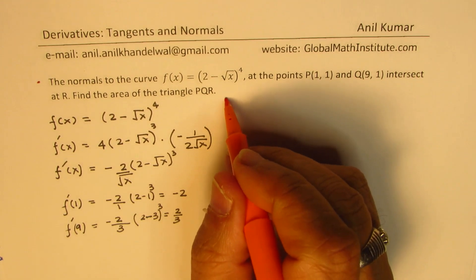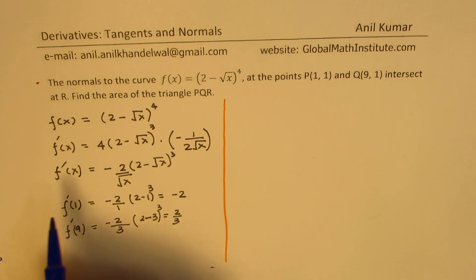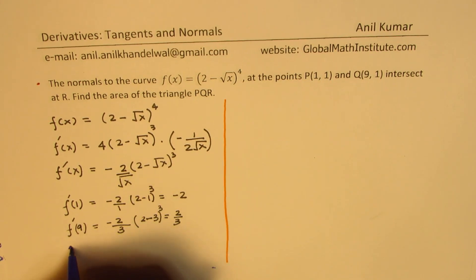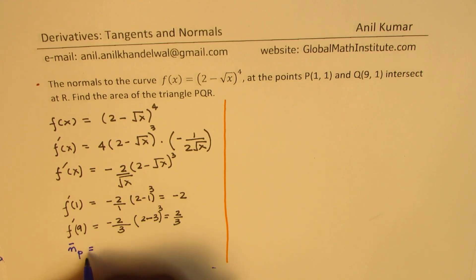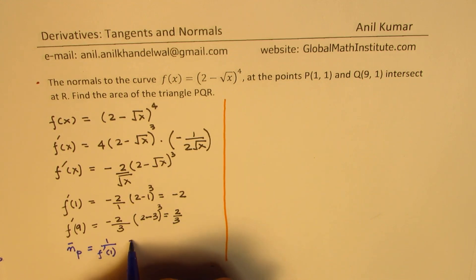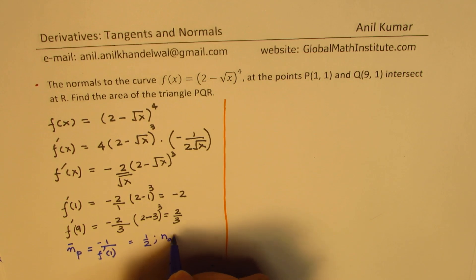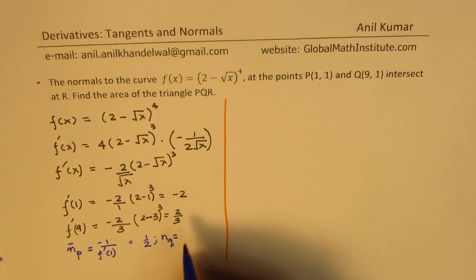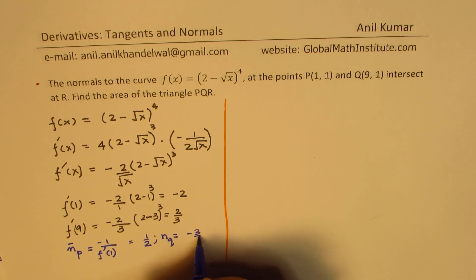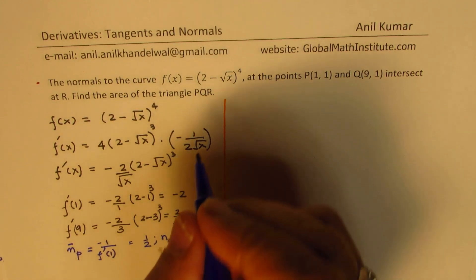These are the slopes of the tangent lines. From here we can find the slopes of the normals. The slope of the normal at P is the negative reciprocal of −2, which is 1/2. The slope of the normal at Q is the negative reciprocal of 2/3, which is −3/2.